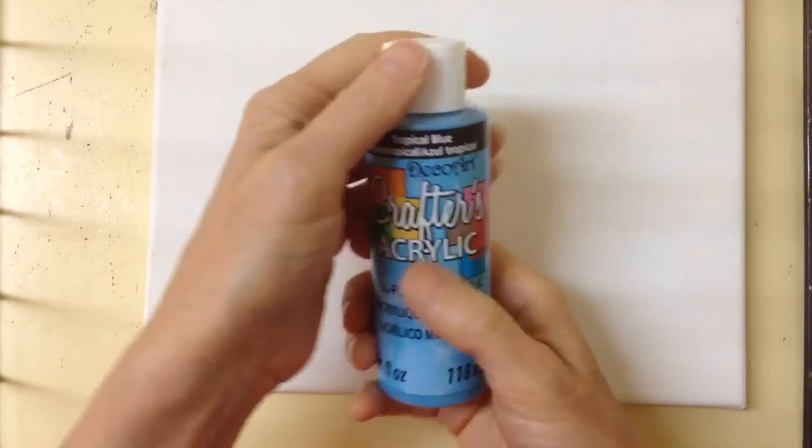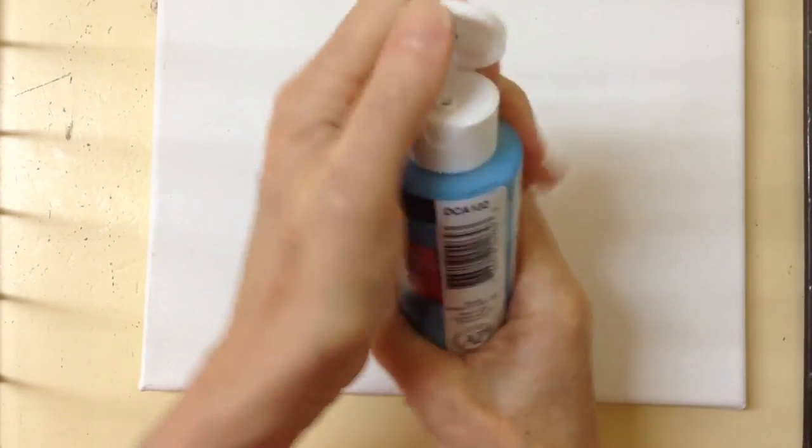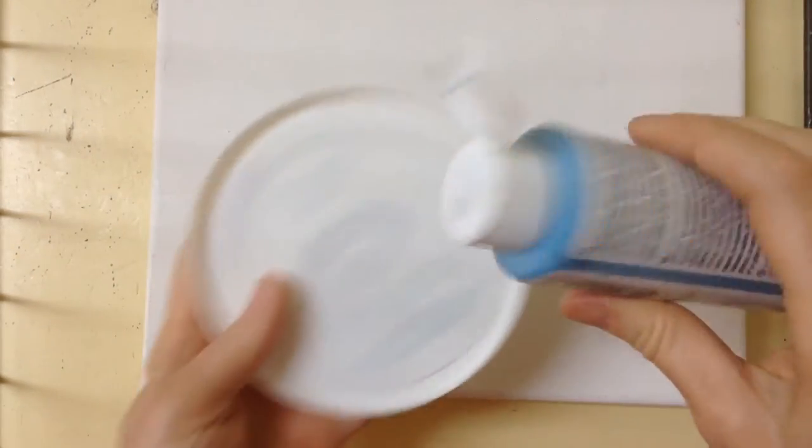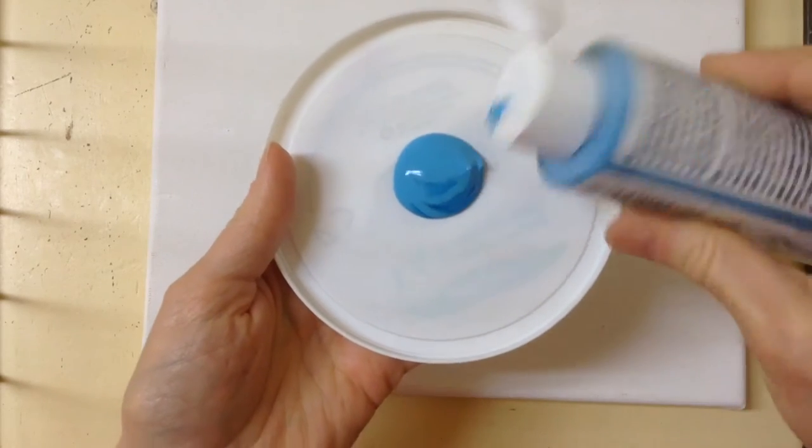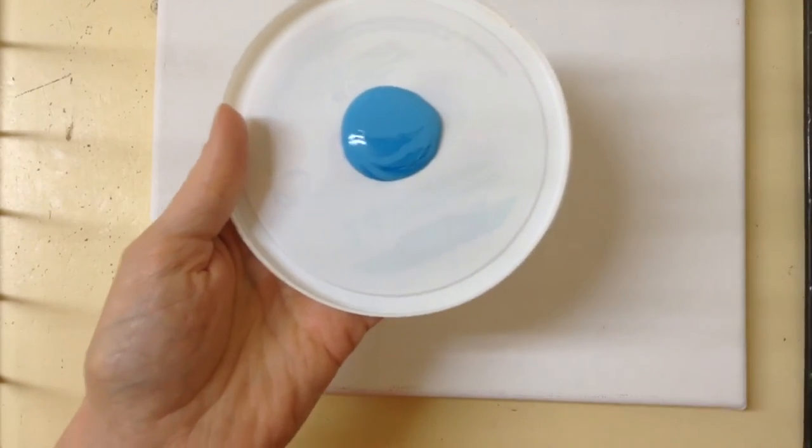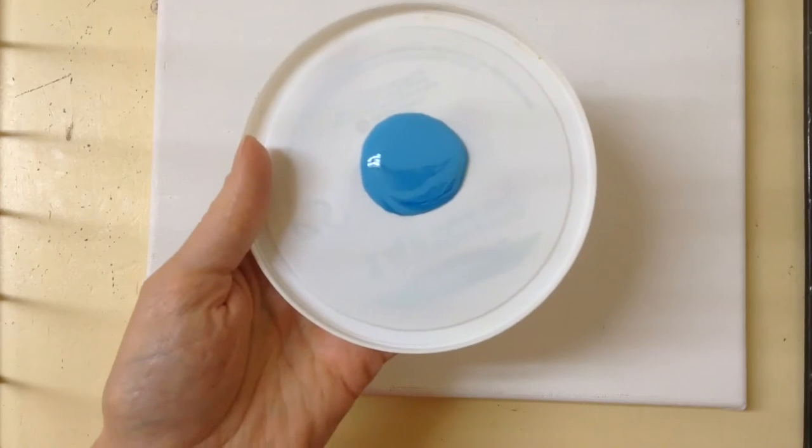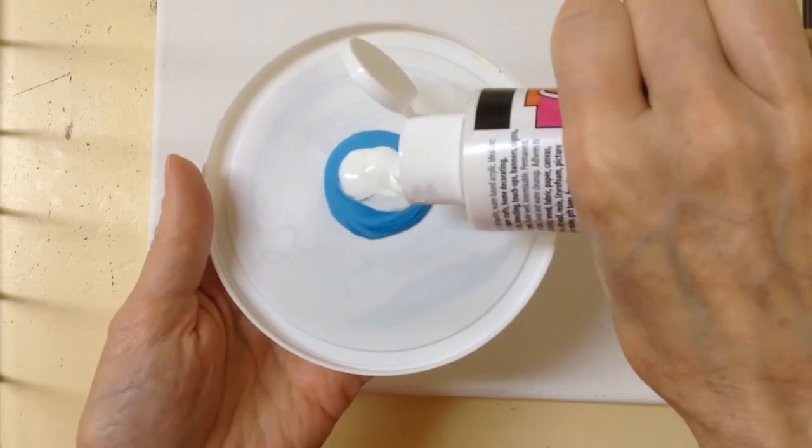For the background of my inspirational word, I'm going to use just a canvas from the dollar store and just some regular acrylic paint that you can also get at any craft store or the dollar store. I'm going to do blue, but I want it a little bit lighter, so I'm going to mix it with some white because this is just going to be the background.